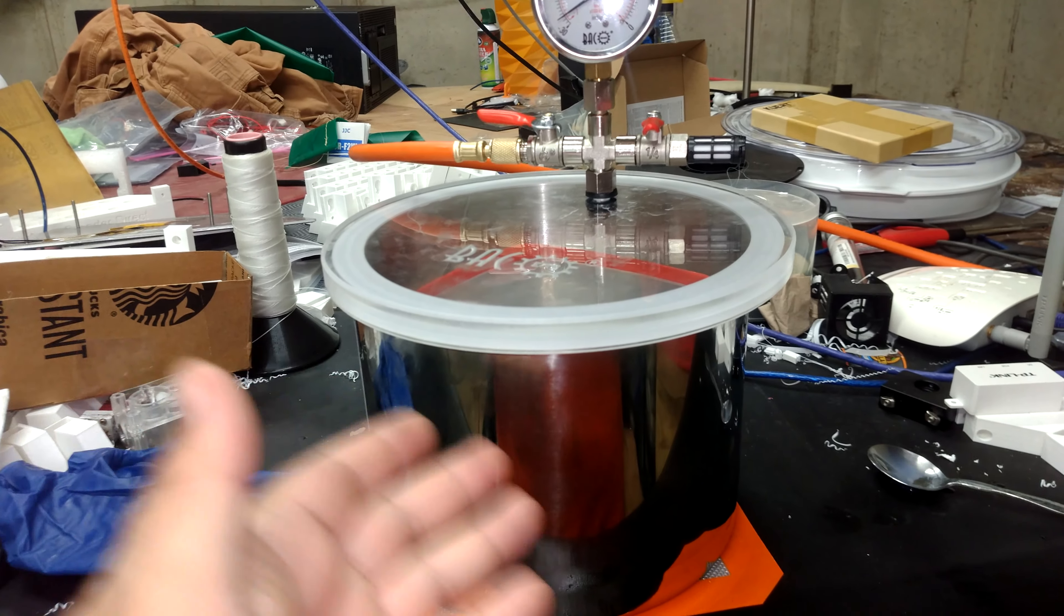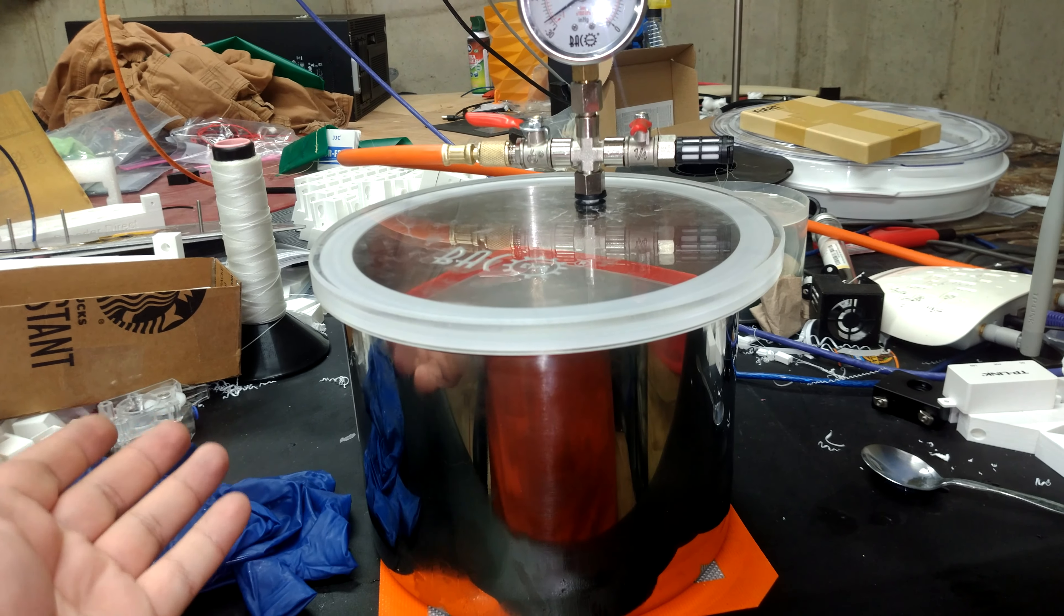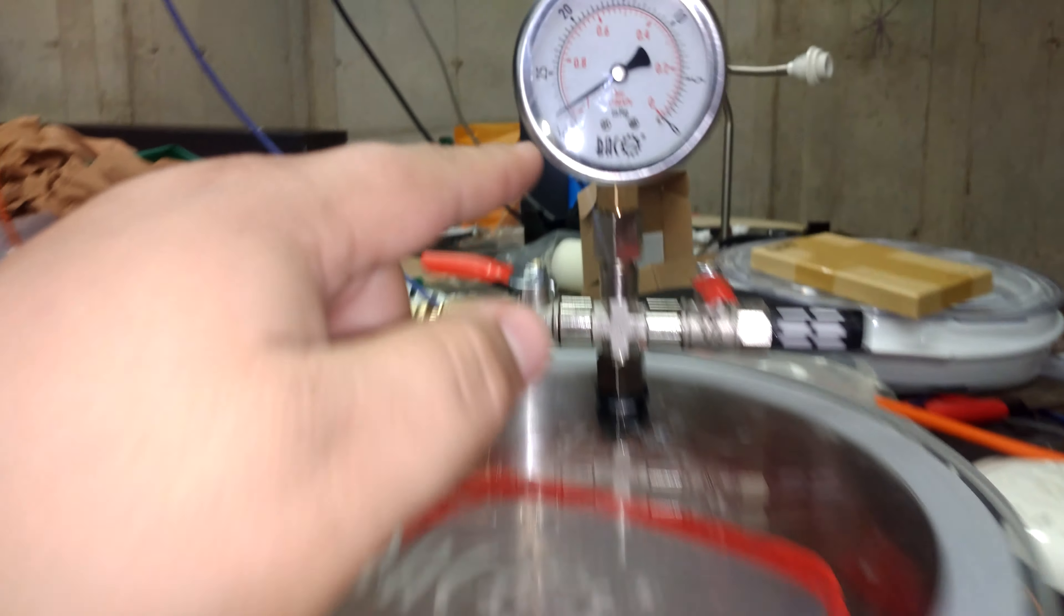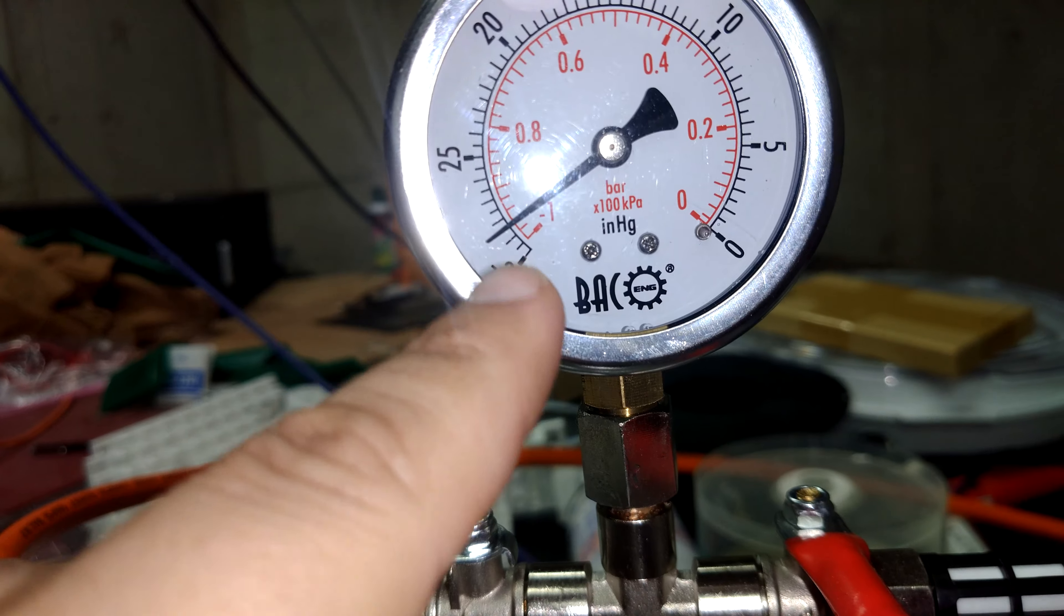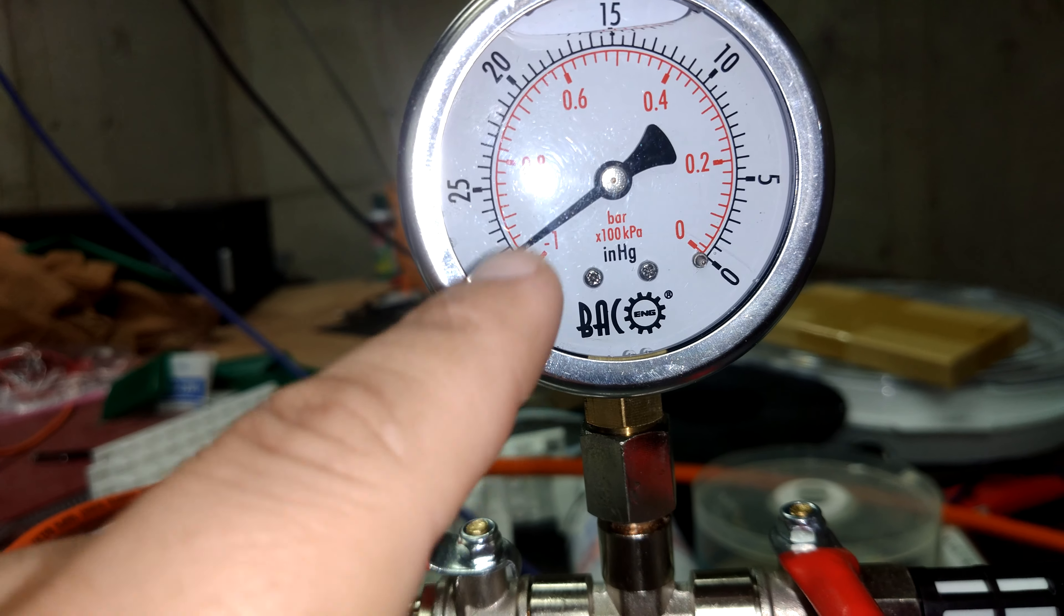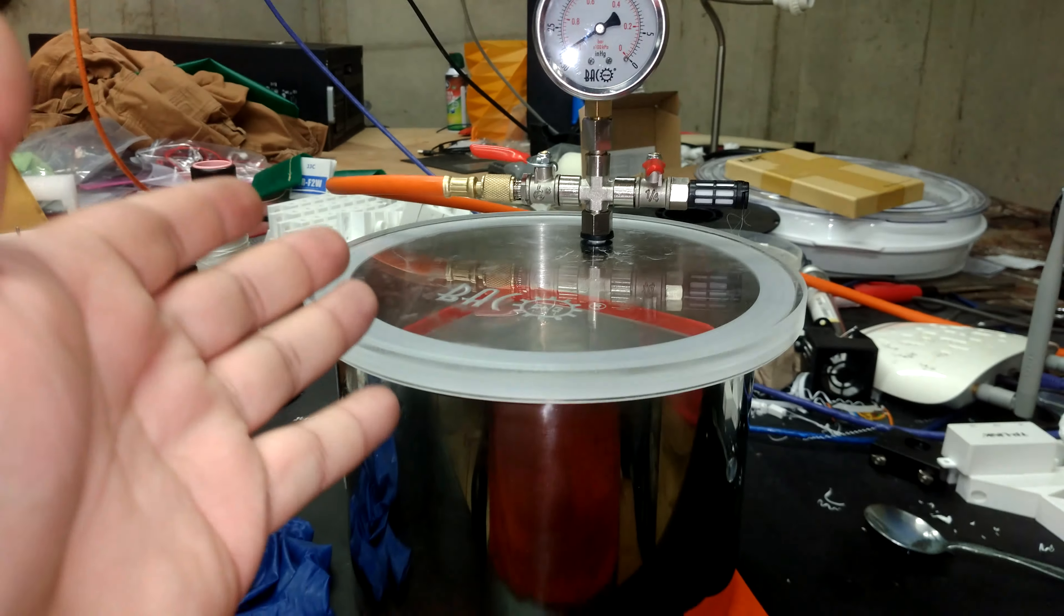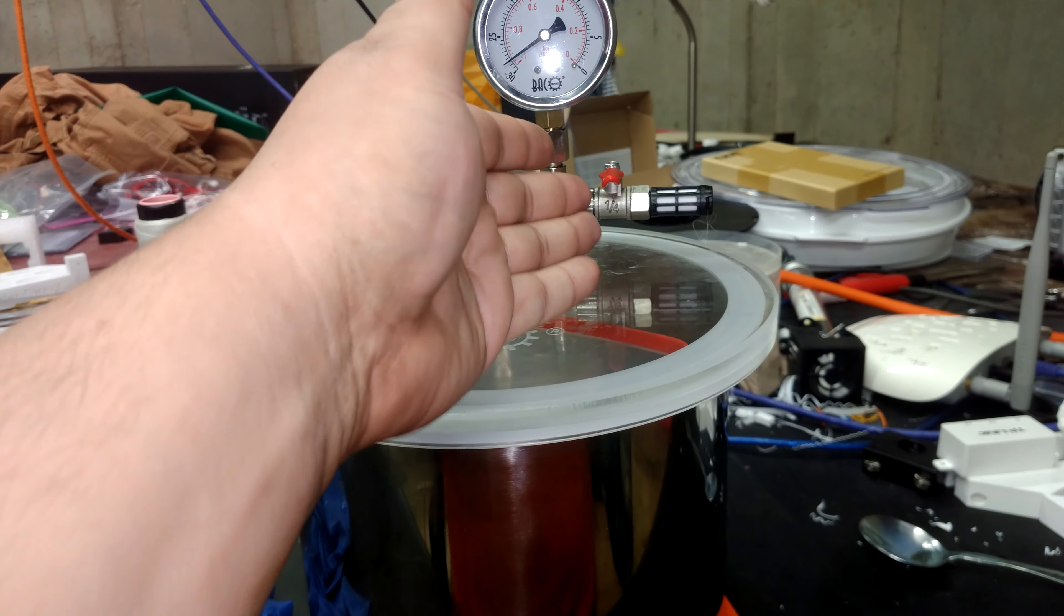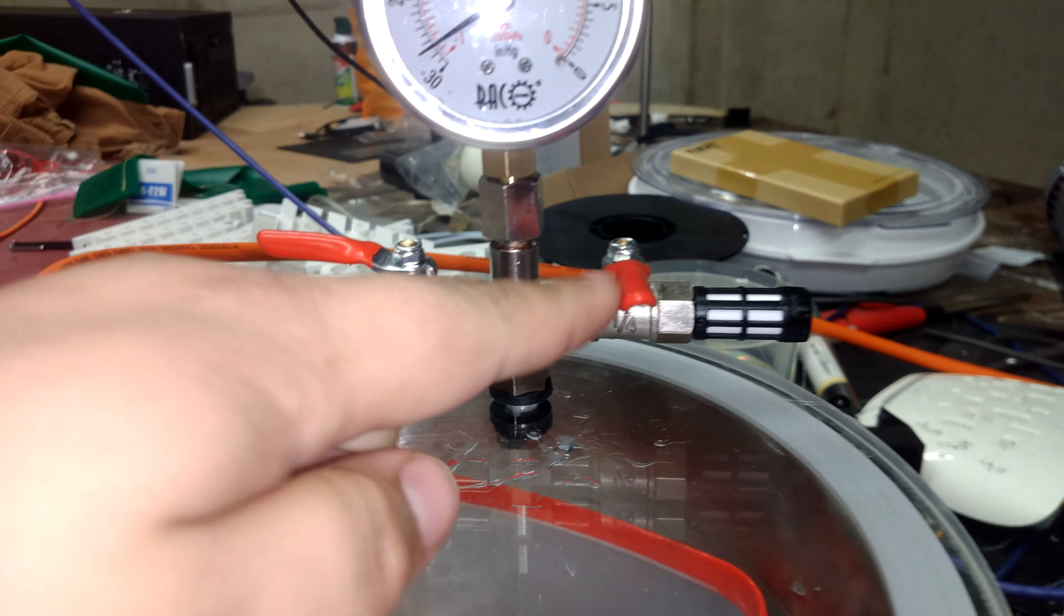The system in the day or two that I've used it hasn't had any problems maintaining a vacuum. I've pulled the vacuum down to just two notches below negative 30 on this gauge and maintained that vacuum for several hours, at which point I decided to release the vacuum by turning this ball valve.